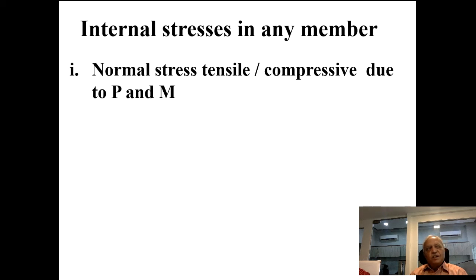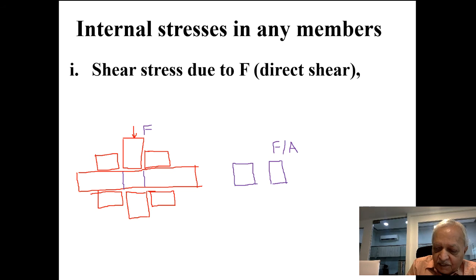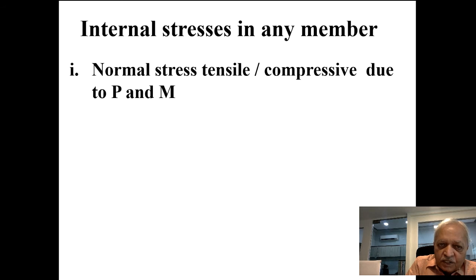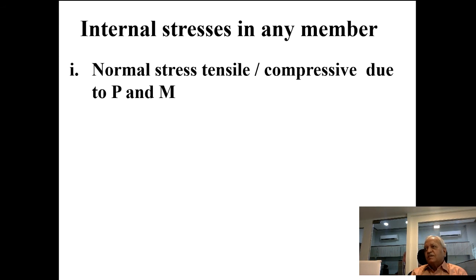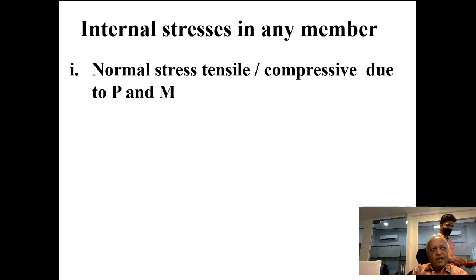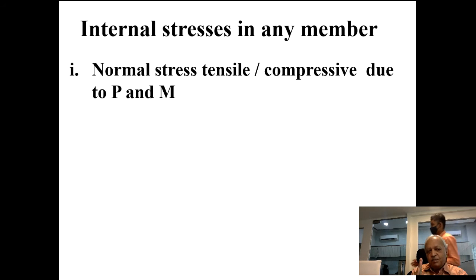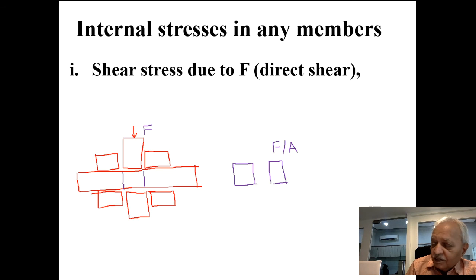For internal forces in a member, the first conversion is for normal stress (tension or compression). For axial force P on a cross-sectional area A, the stress is simply P/A — either direct compression or tension — assumed uniform across the entire section. Shear stress, however, is developed due to three different causes, each requiring a different formula.